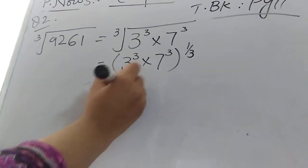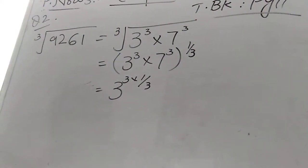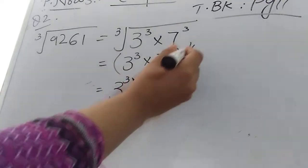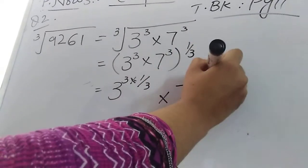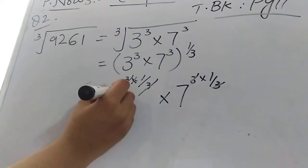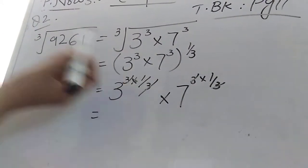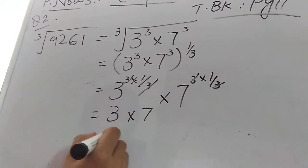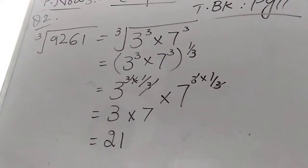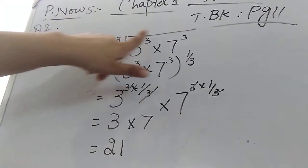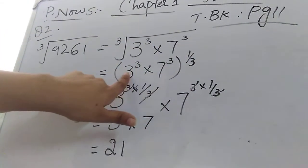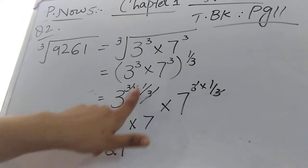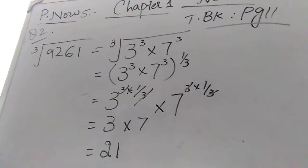This 1/3 multiplies with both numbers inside the bracket. Multiply 3 power 3 by 1/3, and 7 power 3 by 1/3. The 3s cancel in both cases — 3 power (3 × 1/3) = 3 power 1 = 3, and 7 power (3 × 1/3) = 7 power 1 = 7. Then multiply 3 × 7 = 21. That is your answer. So the cube root of 9261 is 21.